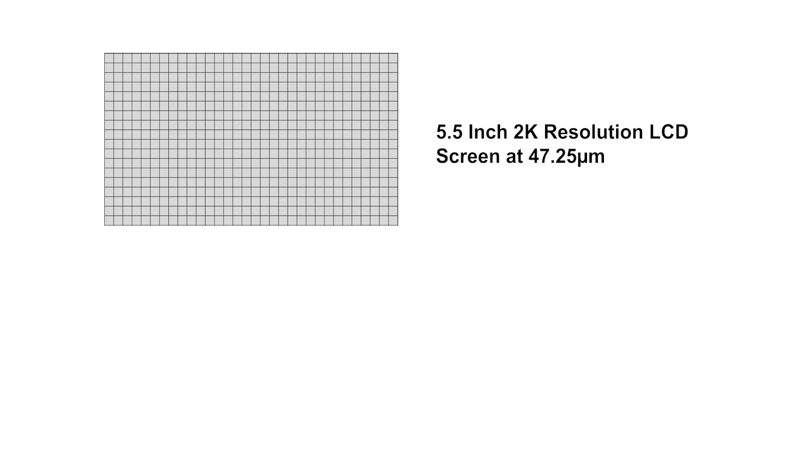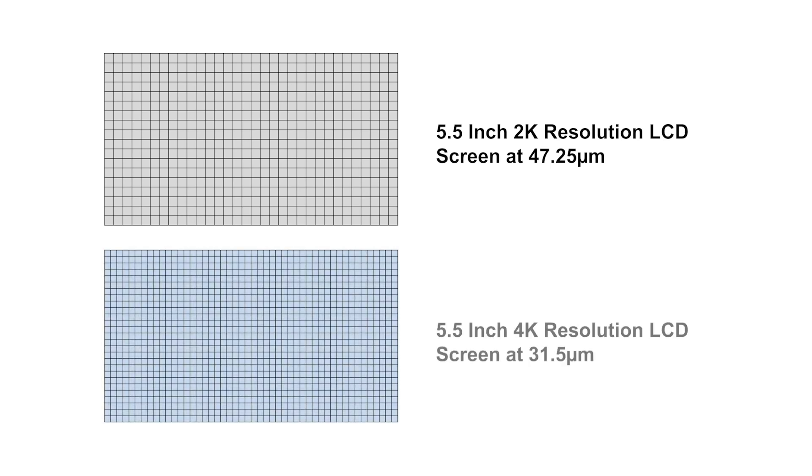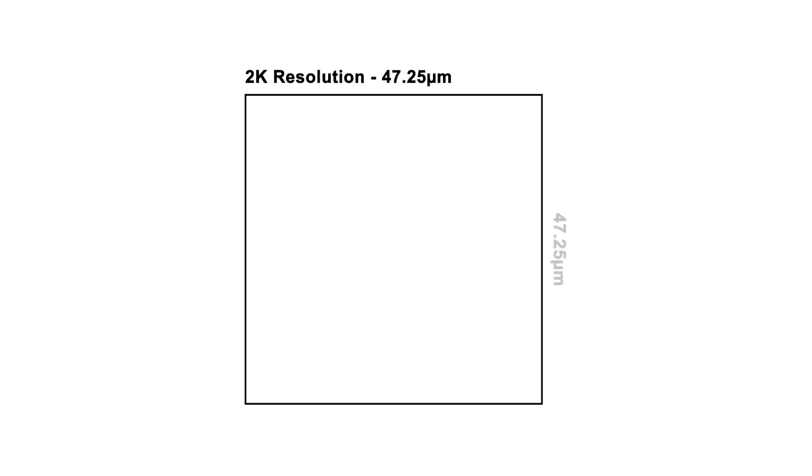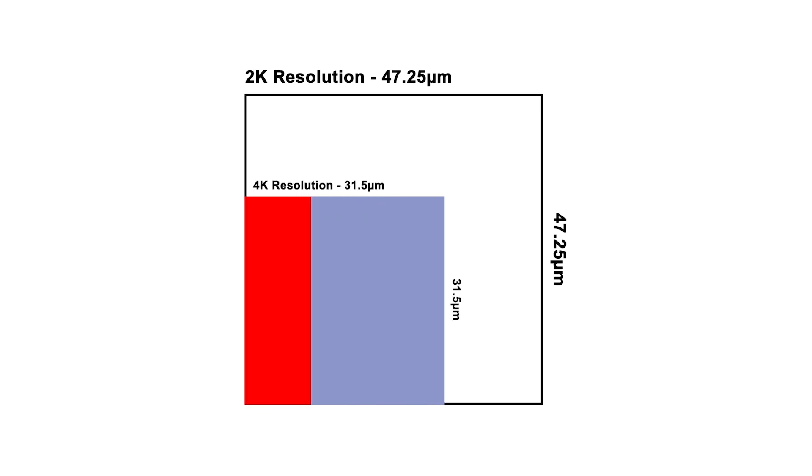The pixel size of a conventional 2K LCD screen is 47.25 microns, while with a high-resolution 4K LCD screen, the pixel size will be driven down to 31.5 microns. Furthermore, if a pixel can be divided into three subpixels, the resolution in one direction will be as fine as 10.5 microns, which is a dramatic improvement over the 2K LCD screen.